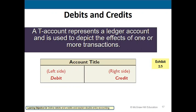Debiting an account doesn't necessarily mean you increase it — it depends on the type of account. For asset accounts, a debit is an increase and a credit is a decrease. For liability accounts, a credit is an increase and a debit is a decrease. Revenue accounts carry credit balances, so to increase revenue you credit it. Expense accounts carry debit balances, so to increase an expense you debit it.